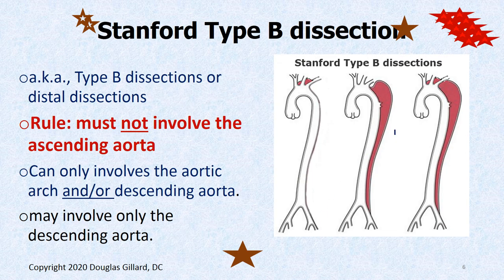Stanford B means it must not involve the aortic arch or the ascending aorta. It can involve just the aortic arch, or the arch and the descending aorta, or maybe just the descending aorta. The rule is it cannot involve the ascending aorta.